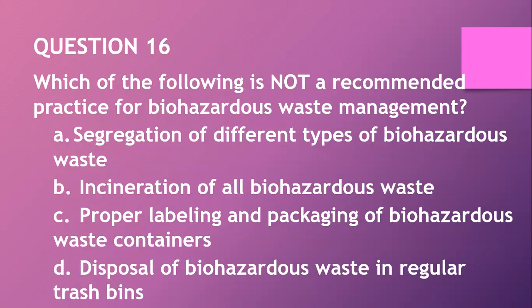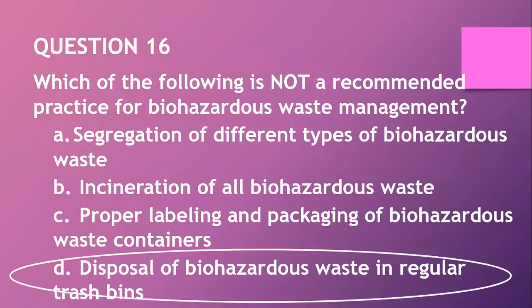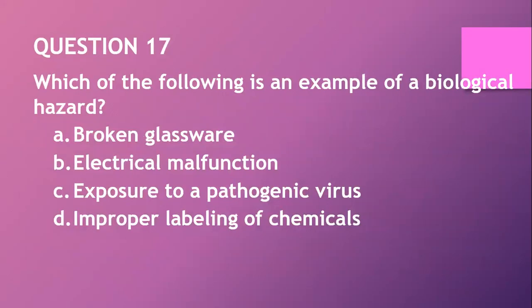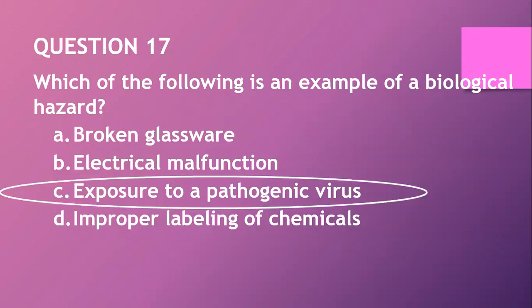Question seventeen: which of the following is an example of a biological hazard? A. Broken glassware. B. Electrical malfunction. C. Exposure to a pathogenic virus. D. Improper labelling of chemicals. The answer is C — exposure to a pathogenic virus is the biological hazard.